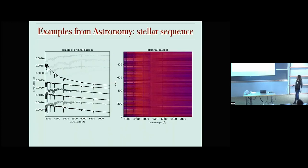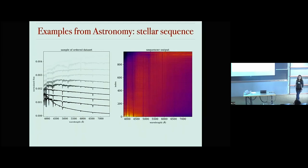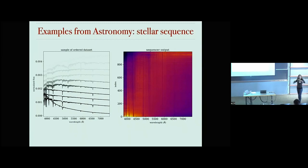Now let's apply it to several datasets from astronomy, starting with stellar spectra. On the left you see a sample of optical spectra of stars; here is the full dataset of 1000 stars — the input to the Sequencer. This is the output: the algorithm detected the stellar sequence with temperature as the leading parameter. The beginning of the sequence is dominated by blue, young stars; the end by red, older stars. All the absorption lines that previously seemed very complex now fall into one well-defined sequence — the entire complexity explained as a function of one parameter.